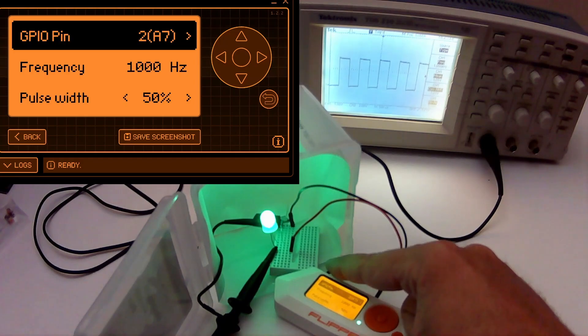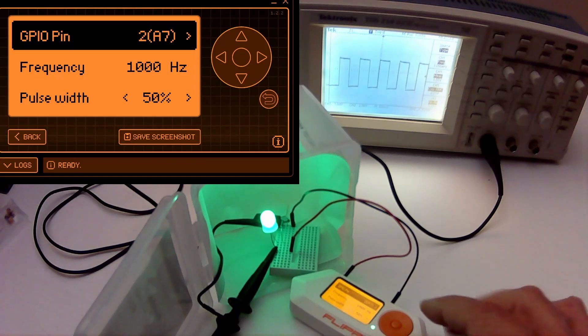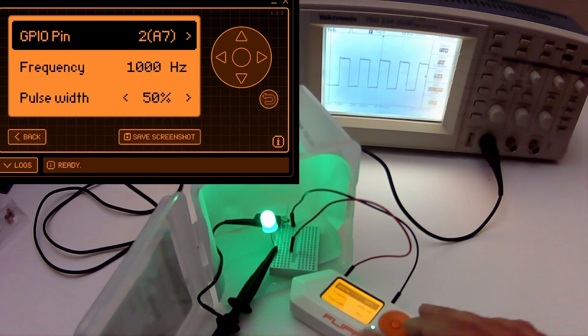It's outputting on pin A7 which is connected to the top of the flipper which connects to the anode side of my LED, 220 ohm resistor and then back into ground.